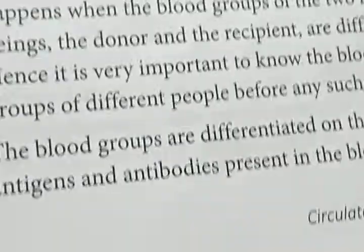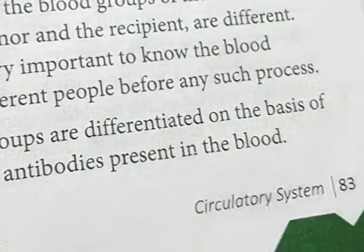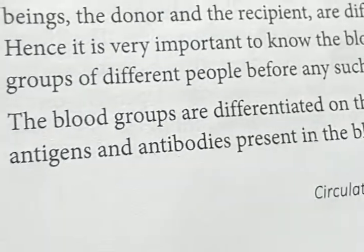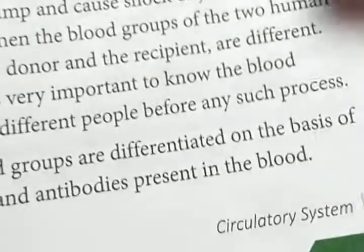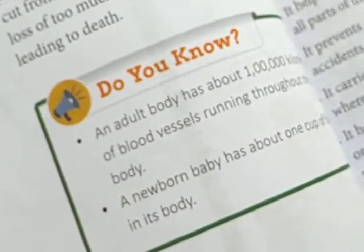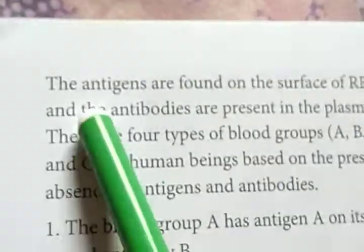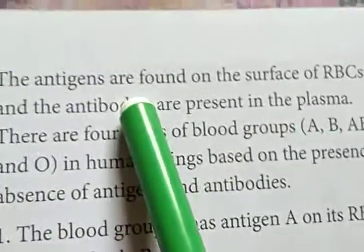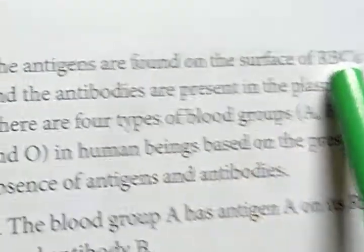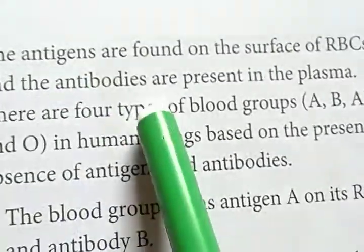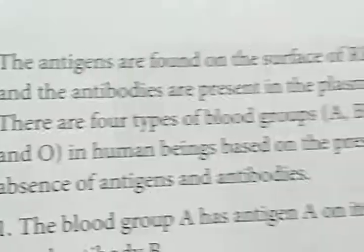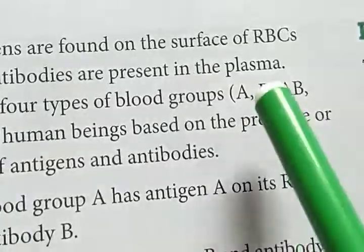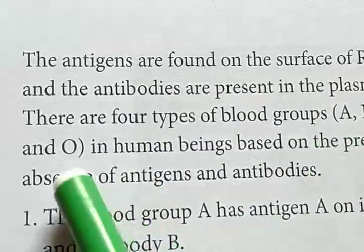The blood groups are differentiated on the basis of antigens and antibodies present inside the blood. The antigens are found on the surface of RBC and the antibodies are present inside the plasma. There are four types of blood groups: A, B, AB, and O.